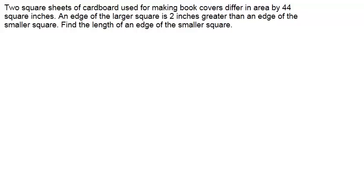You've got two square sheets of cardboard used for making a book, and they differ in area by 44 square inches. All that tells us is that we have two square sheets, one presumably bigger than the other.